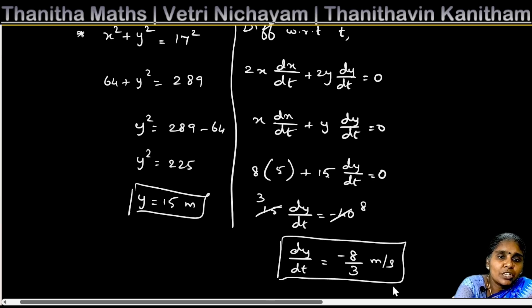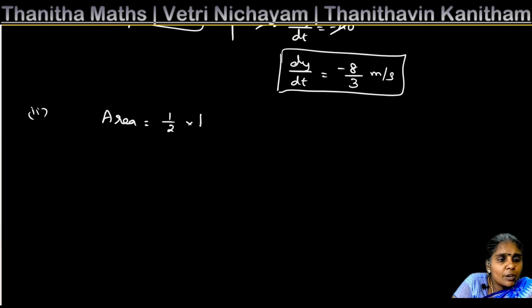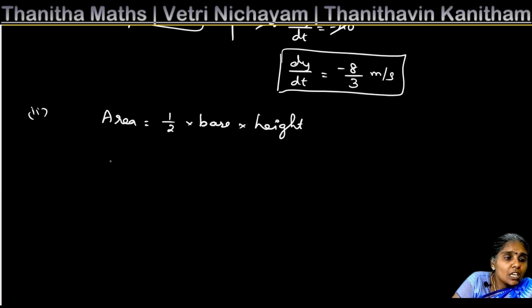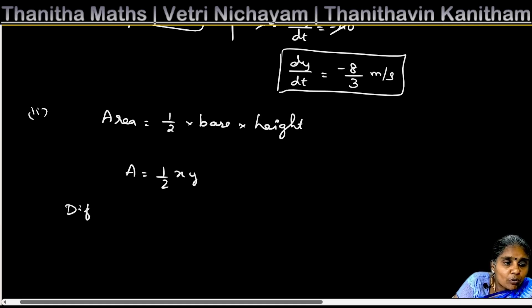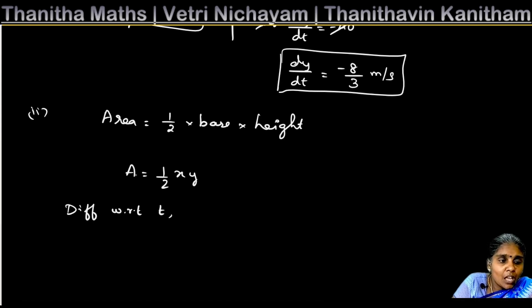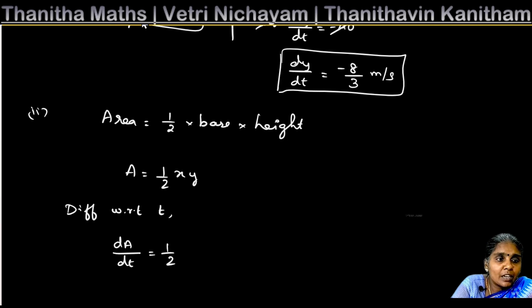For question 2, we find the rate at which the area is changing. The area of the triangle is A = ½ × base × height = ½ × x × y = ½xy.